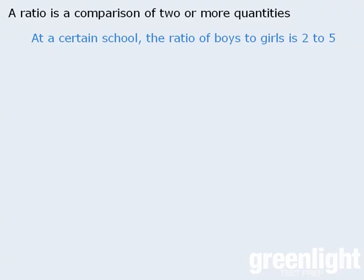For example, we might say that at a certain school, the ratio of boys to girls is two to five. Here we are comparing the number of boys to the number of girls. It's important to note that the two to five ratio does not imply that there are exactly two boys and exactly five girls at the school. Ratios tell us nothing about actual quantities — they only tell us about proportions.